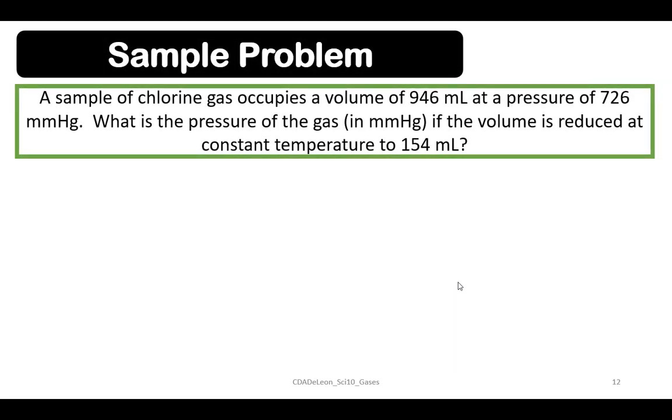Let's have a sample problem. A sample of fluorine gas occupies a volume of 946 mL at a pressure of 726 mmHg. What is the pressure of the gas in mmHg if the volume is reduced at constant temperature to 154 mL?